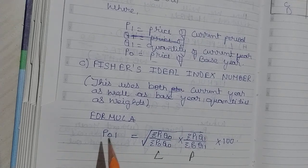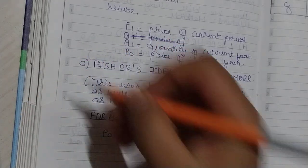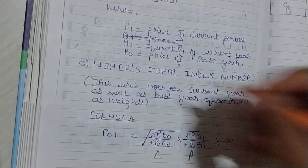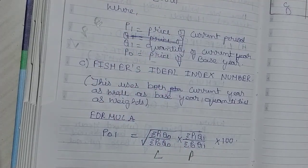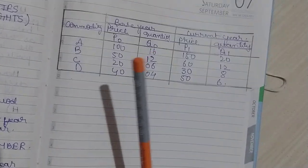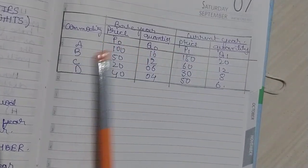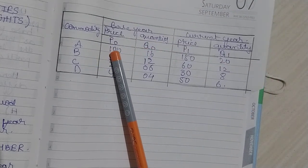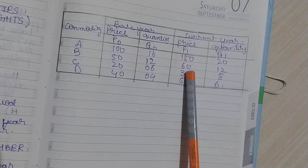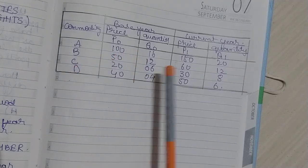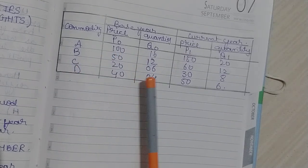This is the theory part of the three different methods under weighted index number: Laspeyres' method, Paasche's method, and Fisher's ideal index number. The question will be in the format with commodity, base year data (P0, Q0), and current year data (P1, Q1). Apply the formula for the three different methods. We shall move to problems in our next video.